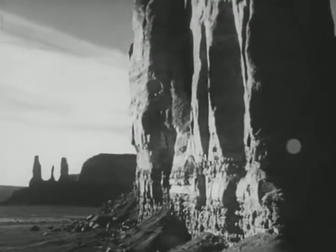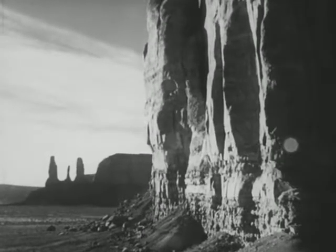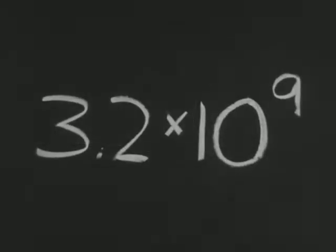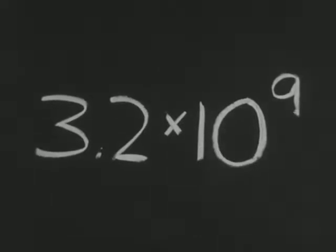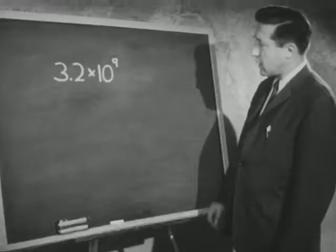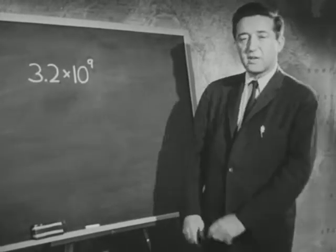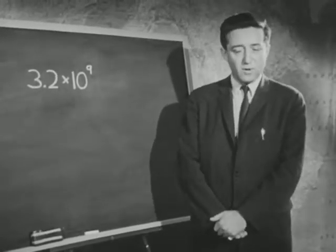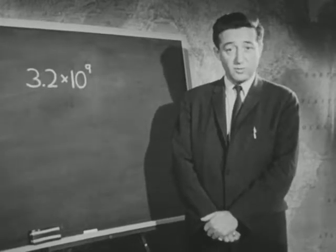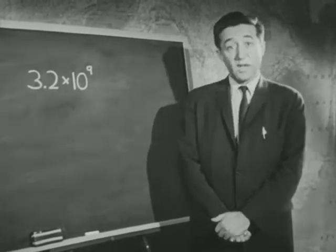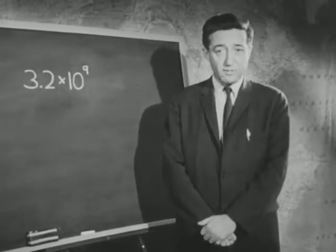How can we use these clocks to measure the age of the earth? The oldest rock in the world yet measured by radioactivity is calculated to be about 3.2 times ten to the ninth, or 3.2 billion years old. Since this rock was found in the earth, we can say that the earth is at least 3.2 billion years old. Thus, we have a minimum limit for the age of the earth.